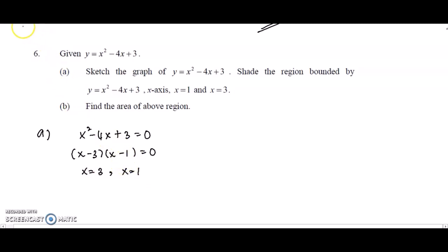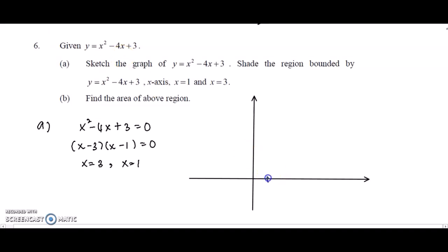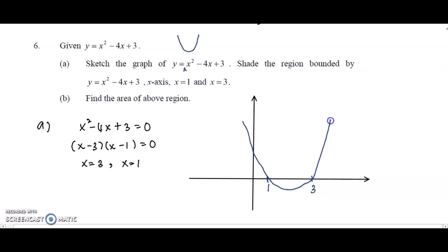We plot the two roots at 1 and 3 on the x-axis. Since the coefficient of x squared is positive, the graph has a minimum point — it has a U-shape. We follow this shape, passing through x equals 1 and x equals 3 and going up. This gives us the curve of y equals x squared minus 4x plus 3.